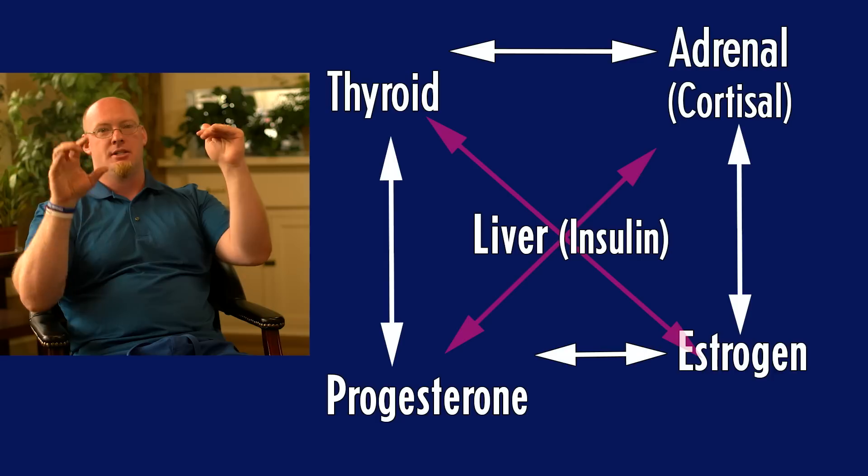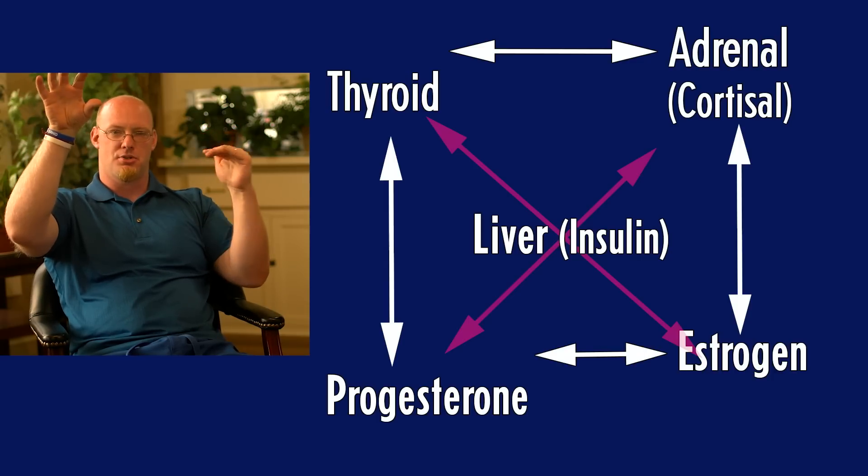If you go estrogen-dominant, you suppress your thyroid. And if the thyroid isn't operating properly so that fuel isn't being burnt correctly because cells aren't being activated, you start to become insulin-resistant because there's too much fuel in the system. The body can't open up all the cells or metabolize all that fuel properly. That whole estrogen-dominant hypothyroid situation starts to create a pre-diabetic situation.